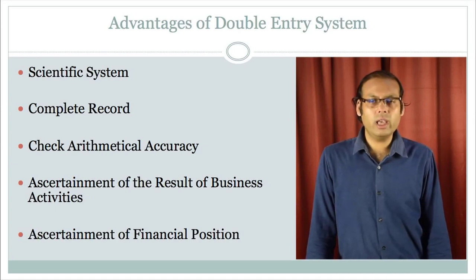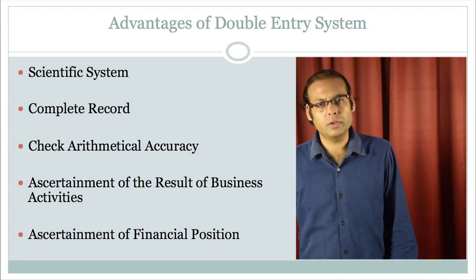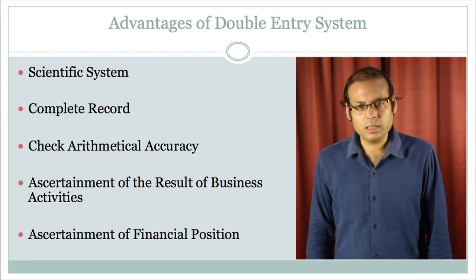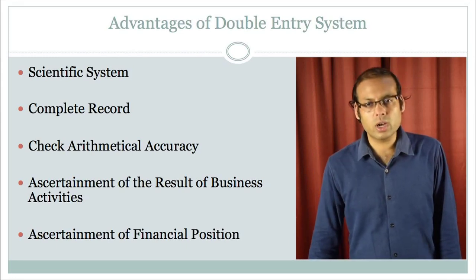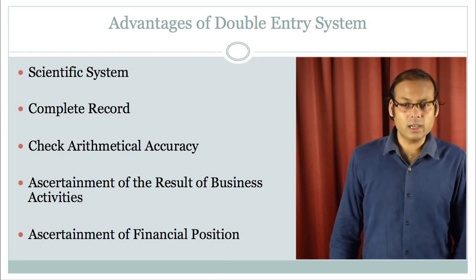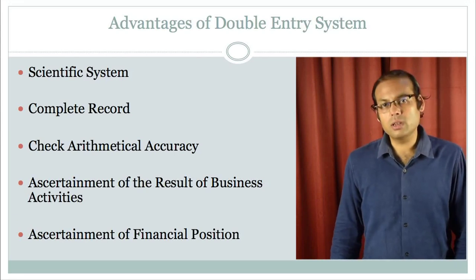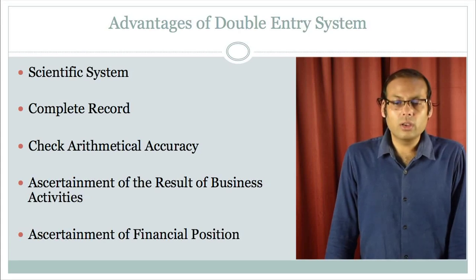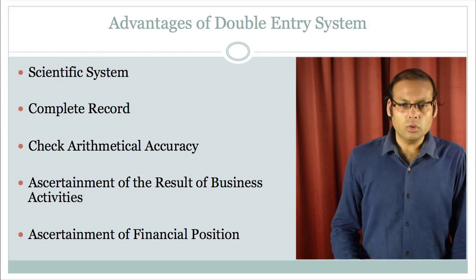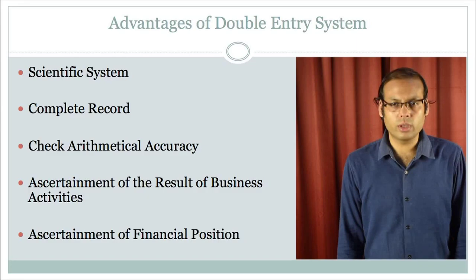It will check arithmetical accuracy automatically. You can ascertain the results of the business activities — the amount spent for purchases, for example. And accordingly you can ascertain the financial position at the end of a particular period of time. These things are automatically generated when we follow this double entry system of bookkeeping.